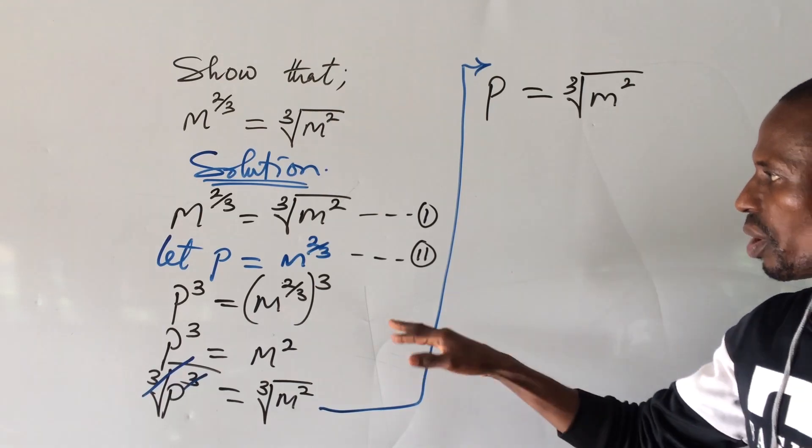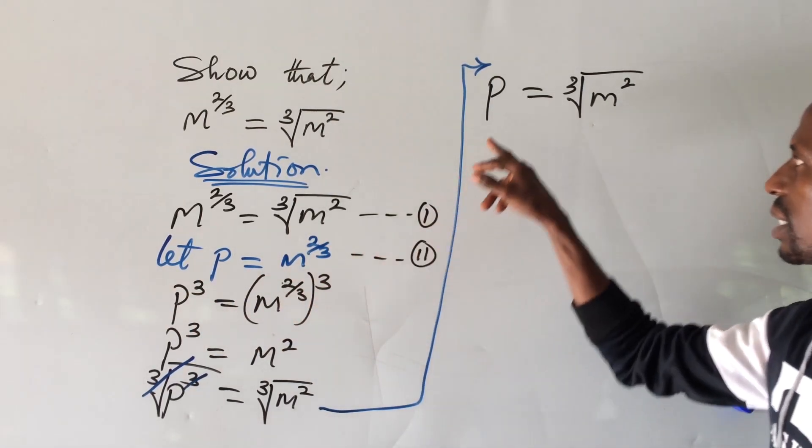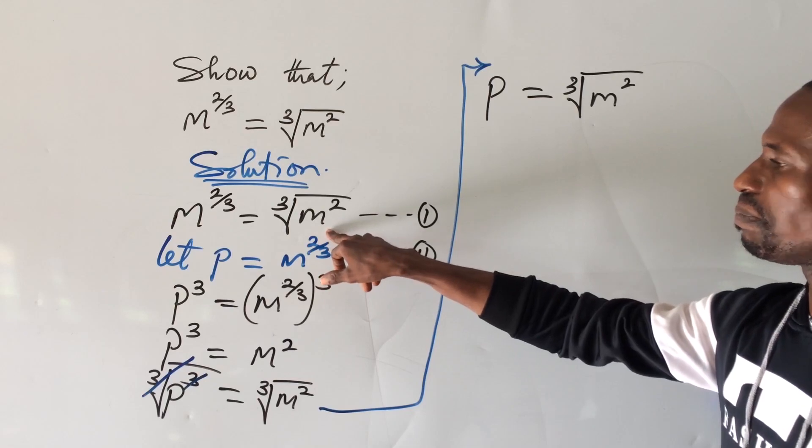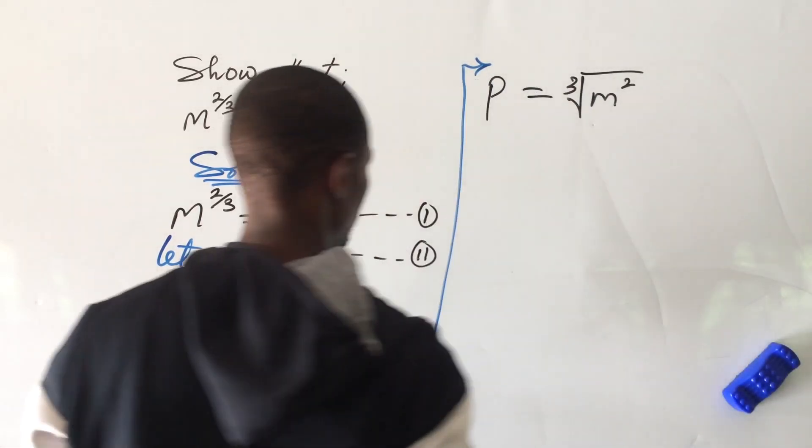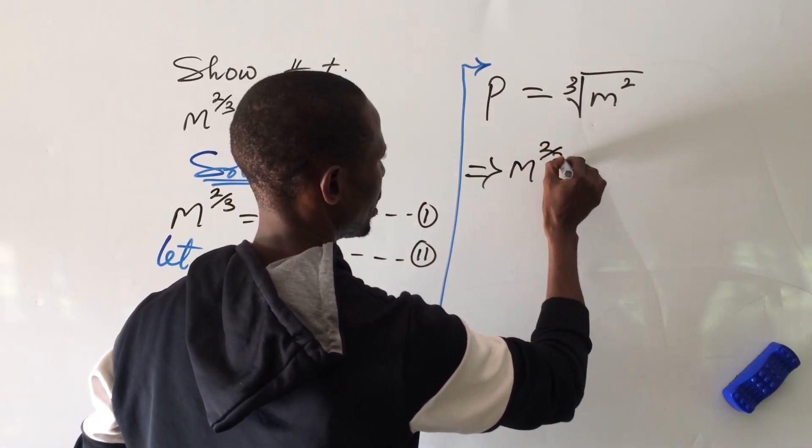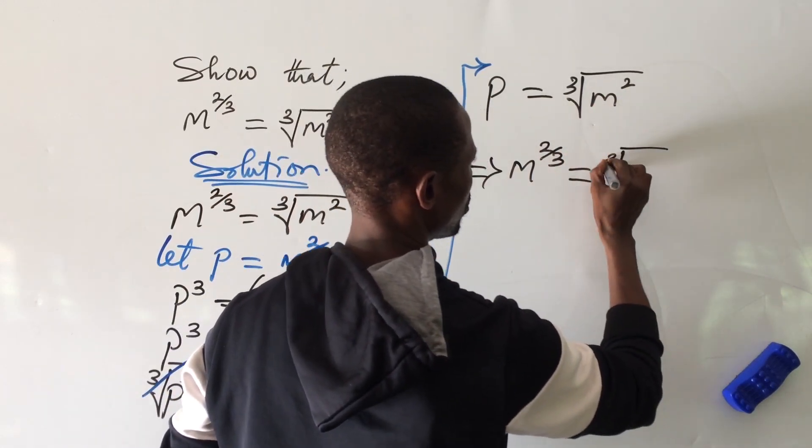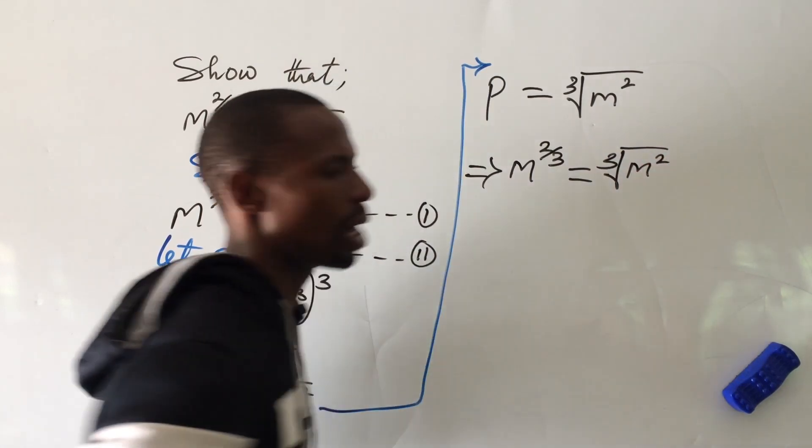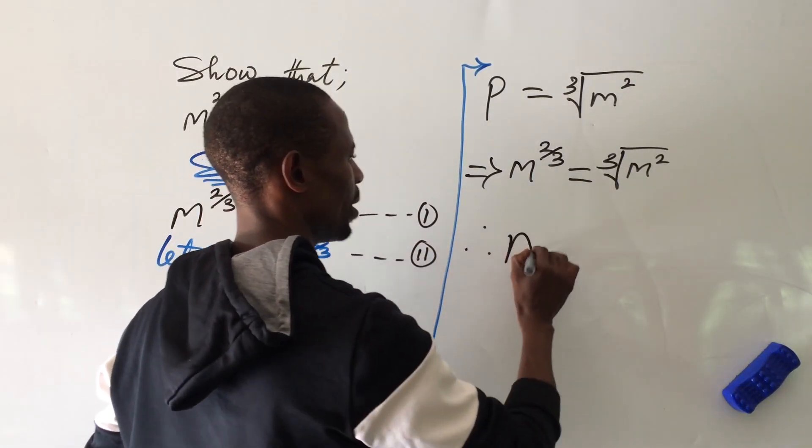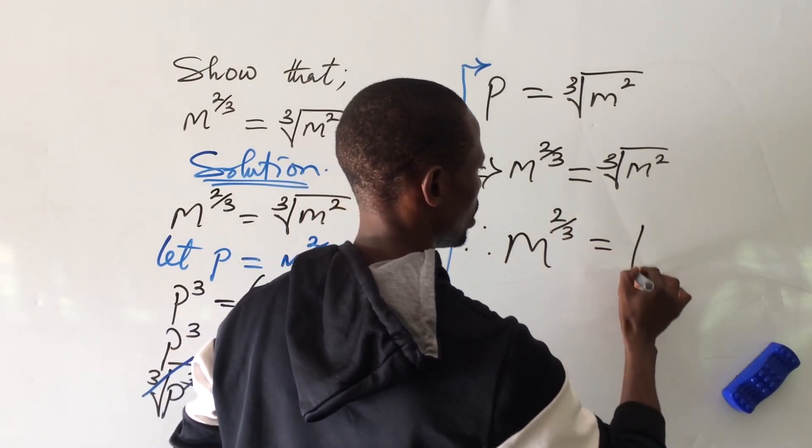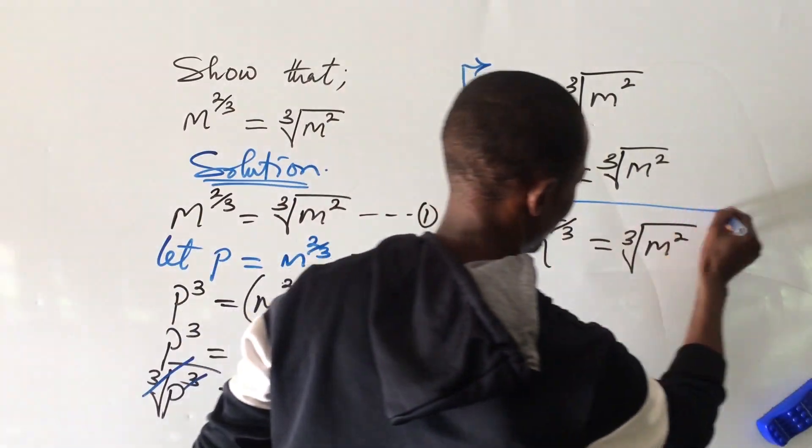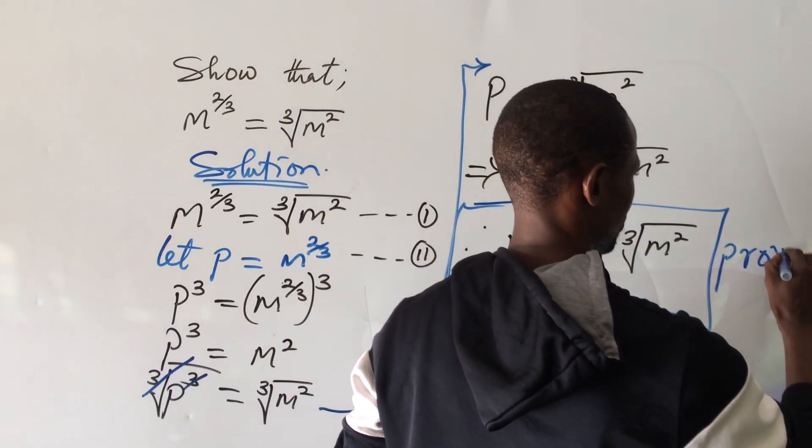Now let's look at this. Go back to where we said let p is equal to m to the power of 2 over 3. What is our p here now? Look at p is equal to this. So let's replace our p with m to the power of 2 all over 3. So if we put that here, this now implies that m to the power of 2 all over 3 is equal to the cube root of m to the power of 2. What are we asked to prove? Look at what we asked to prove. And that is what we have here now. So therefore, we now have m to the power of 2 all over 3 is equal to the cube root of m to the power of 2. Simple as ABC. Proved.